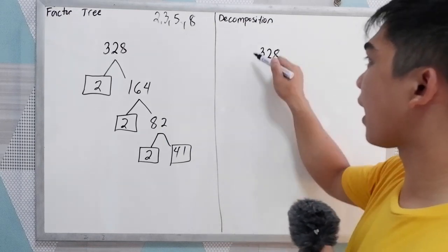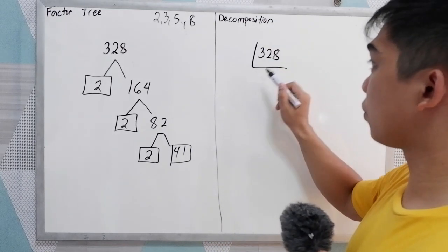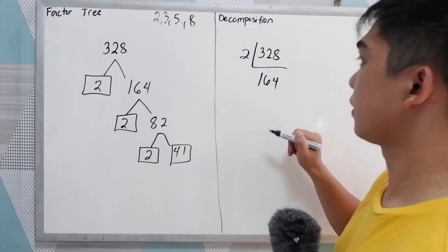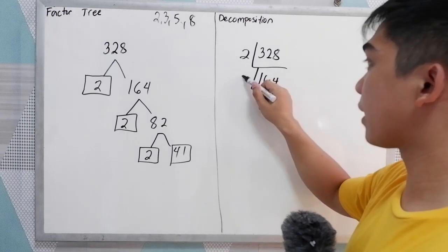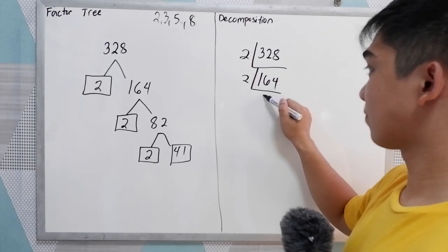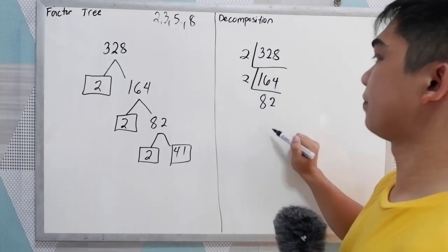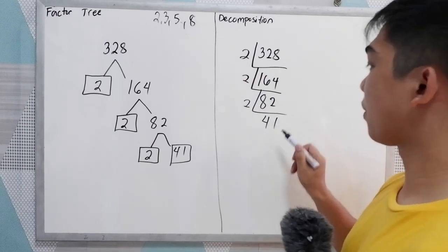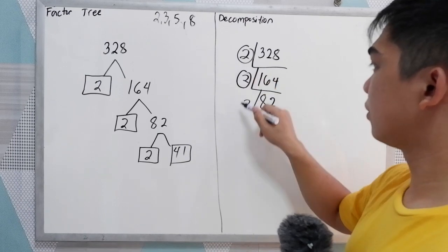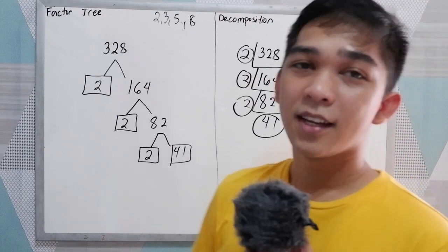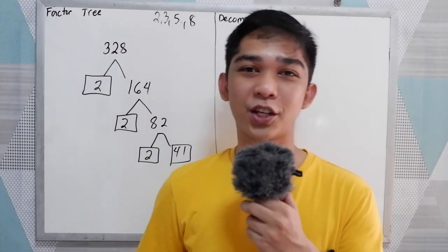Now let's verify using the decomposition method. 328 is divisible by 2, giving 164. 164 is divisible by 2 again, giving 82. 82 is divisible by 2, giving 41. So the prime factors are 2, 2, 2, and 41. That is the prime factorization. Thank you for watching, Senior Pablo TV.